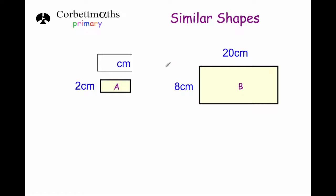Okay, let's have a look at another one. This time we've got rectangle A and rectangle B again — they're similar — and we've been asked to find the length of rectangle A. The width of rectangle A is two centimetres and the width of rectangle B is eight centimetres, and that's four times larger.